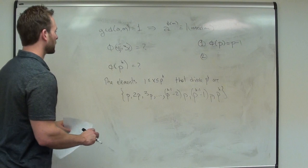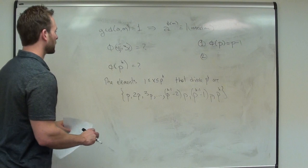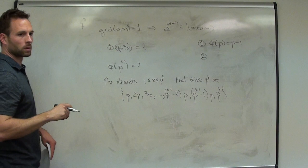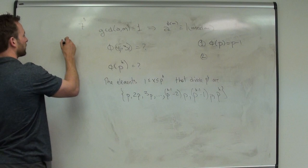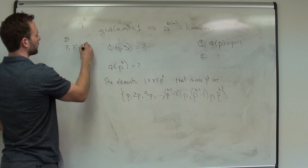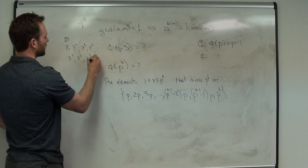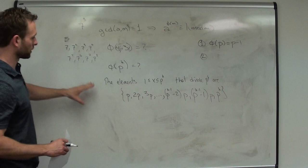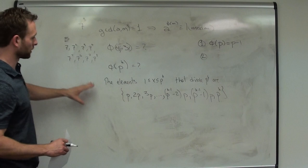Think about something like 7 to the 8th. What numbers are going to have common factors with 7^8? Well, the numbers that share common factors other than 1 with 7^8 are: 7, 7^2, 7^3, 7^4, 7^5, 7^6, 7^7, 7^8 — those are the only ones, because this is just a bunch of 7s. So those are the only numbers less than or equal to p^k that have a common factor with p^k.